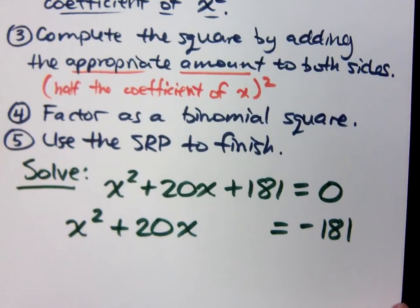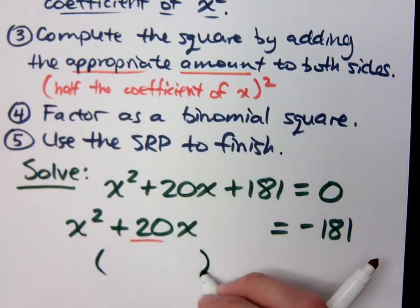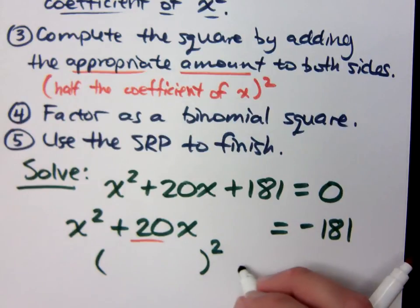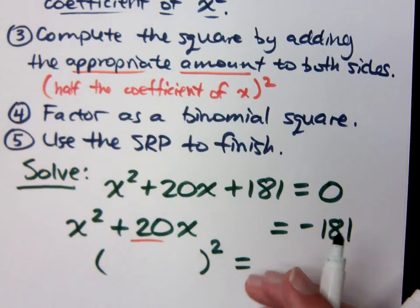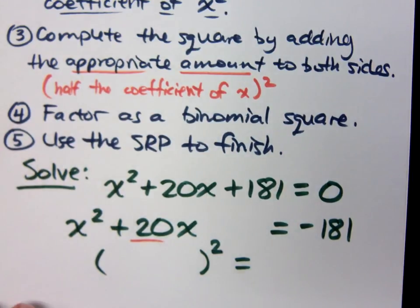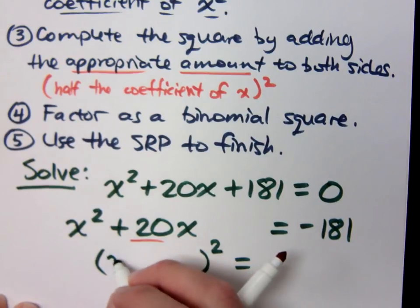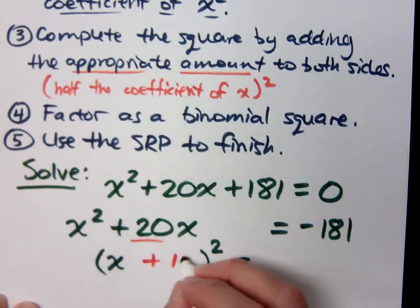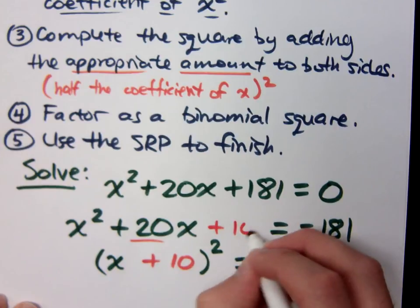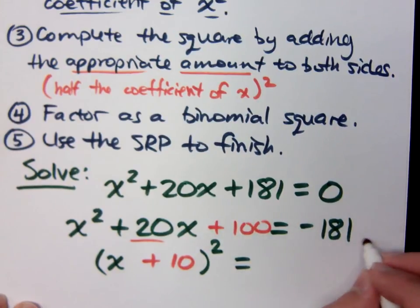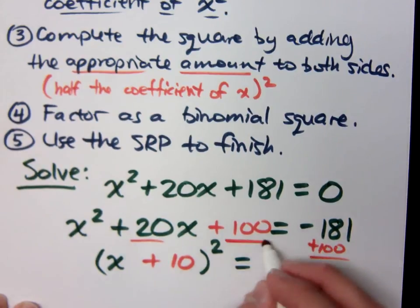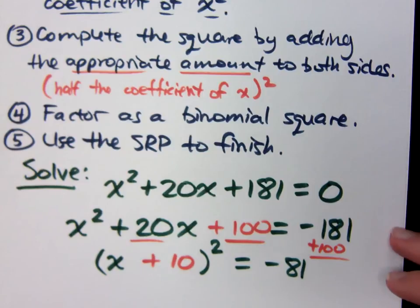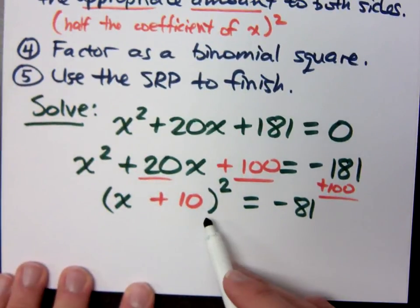Step three: I have to add the right amount to both sides. I look at the coefficient of x, divide by two, and square it. What's half of 20? Positive 10. What's 10 squared? 100. So I add 100 here, but if I add 100 on the left, I have to add 100 on the right as well. So x plus 10 squared equals negative 81. We've already factored the binomial square.